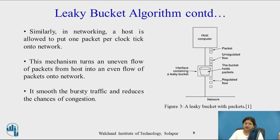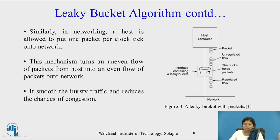Similarly, in networking, the host is allowed to put one packet per clock tick onto the network. This mechanism turns an uneven flow of packets from the host into an even flow of packets onto the network. It smooths the bursty traffic and reduces the chance of congestion. In this diagram, unregulated packets arrive from the host computer and go to the interface containing the leaky bucket. The bucket holds the packets and sends them one by one per clock tick, producing a regulated flow. Before the leaky bucket there is unregulated flow; after it, regulated flow is provided to the network.